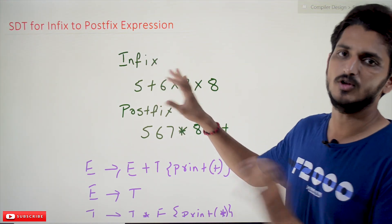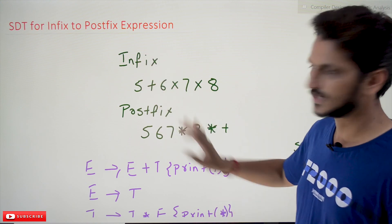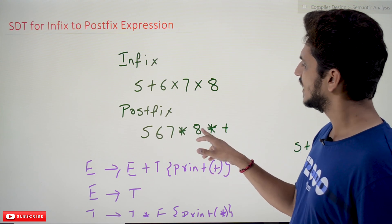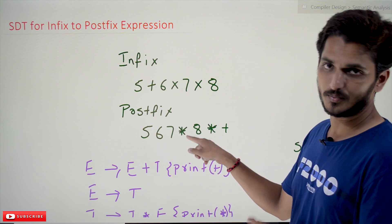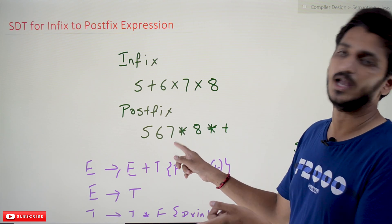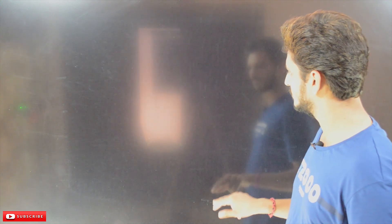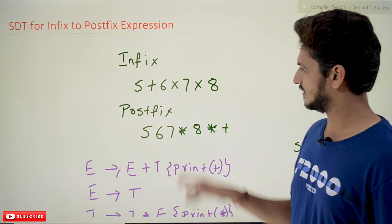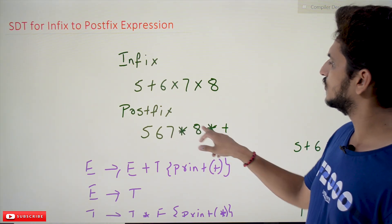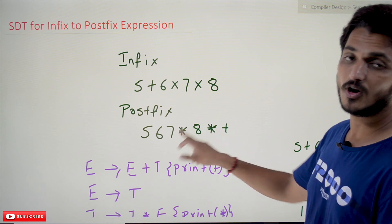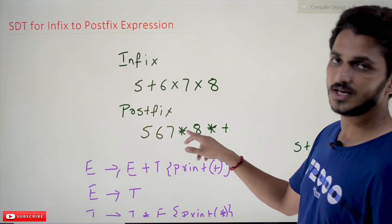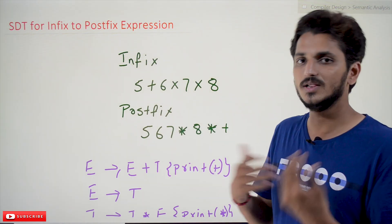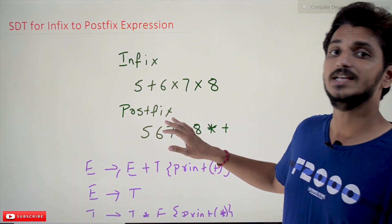If you convert this infix expression to postfix, the expression becomes: 5 6 7 * 8 * +. How does it evaluate? Whenever you see an operator, multiply with the previous two values: 6 multiplied by 7 gives 42. Next, 42 and 8 — whenever you see the star operator, 42 multiplied by 8 is computed. After that, the plus is seen, so 5 plus the previous output is added. There is no going forward and coming back — that's why postfix expression is easy to evaluate.